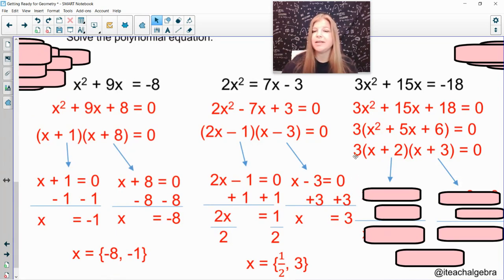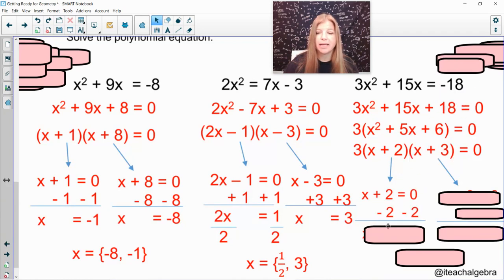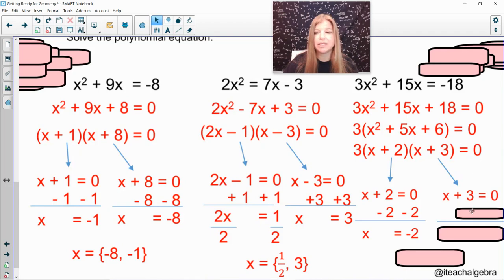And the last one, I'm not setting 3 equal to zero because 3 does not equal to zero. You only set the factors equal to zero that have a variable in them. Had I said 3x on the outside, then that would be set equal to zero. If I set x + 2 equal to zero, I get negative 2 as my first solution. And if I set x + 3 equal to zero, I get negative 3 as my second solution.